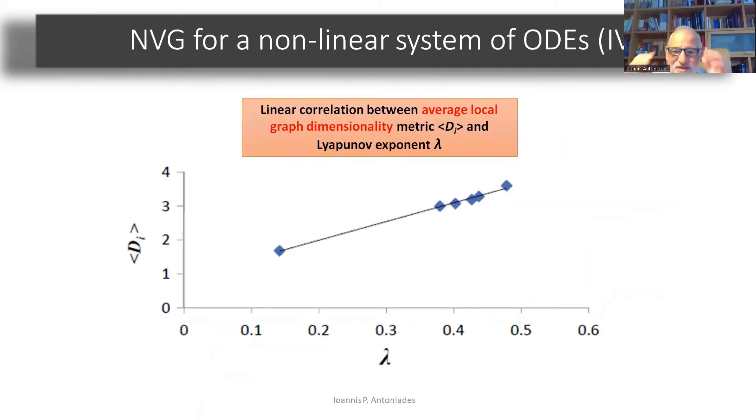This is another interesting result that came from that study is that there was a direct linear correlation between the Lyapunov exponent and a graph metric called the average local graph dimensionality. And you can see there's a really linear correspondence. And this was a result of that study, which is really interesting.